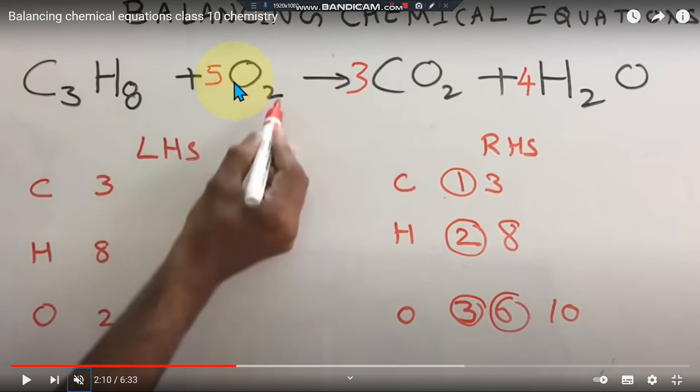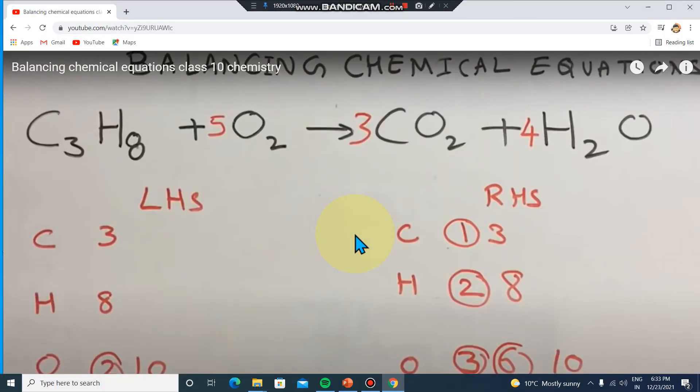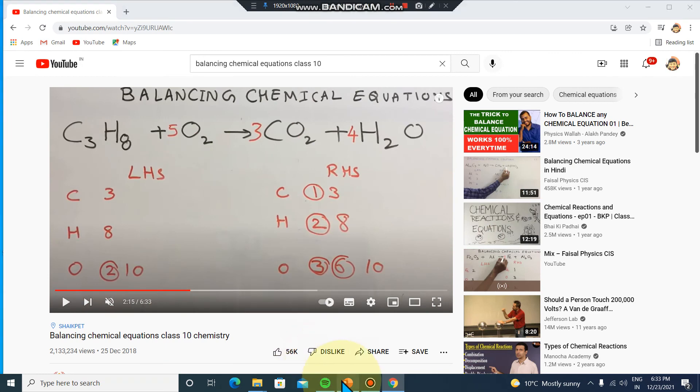So 5 times 2 equals 10. Okay, 5 times 2 is 10. 3, 3, 3. 8, 8, 8. 10, 10, 10. So now this chemical equation is balanced.